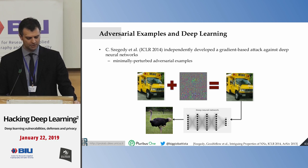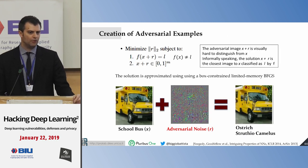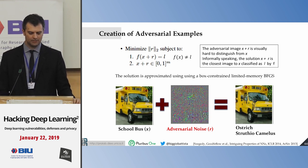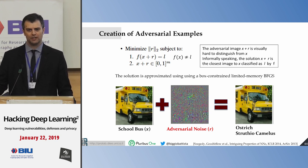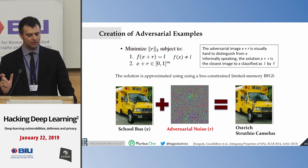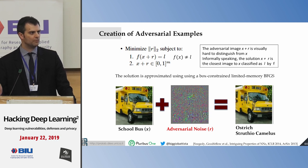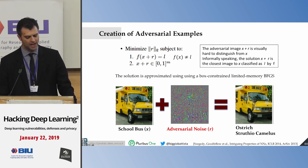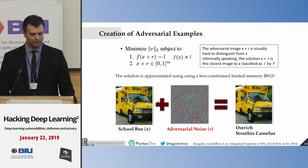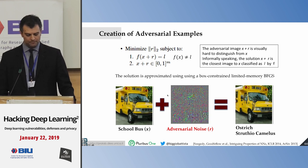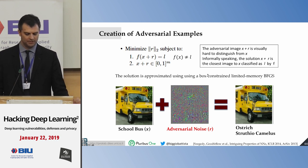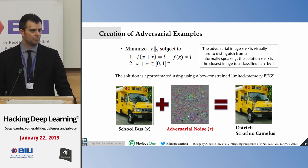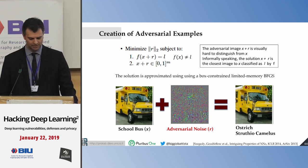Their formulation looks for the minimal noise required to have an image misclassified as desired, minimizing the Euclidean distance between the original and perturbed images while achieving a target label. This was solved using L-BFGS, a popular gradient-based technique with constraints — similar in spirit to what we had done. After this, many defenses were proposed to detect adversarial examples at minimum distance, but these were subsequently broken because the attacks didn't account for the defense mechanism.